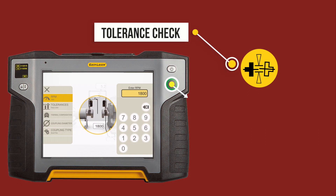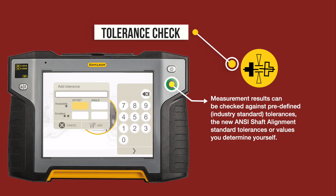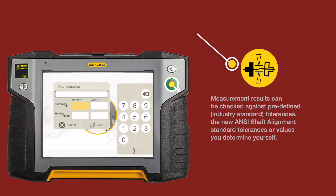Tolerance check. Measurement results can be checked against predefined industry standard tolerances, the new ANSI shaft alignment standard tolerances, or values you determine yourself.